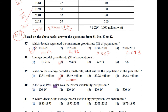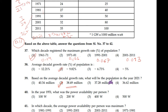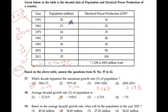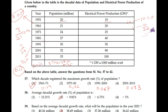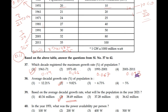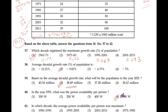Question number 40: In the year 1951, what was the power availability per person? In 1951, there were 20 million people and electrical power production was 10 gigawatts. So for one person it would be 10 divided by 20, which comes to approximately 500 watts. The 4th option is the correct answer.